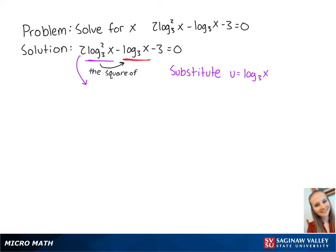Now we have 2u squared minus u minus 3 equals 0. This can factor out to become (2u minus 3) times (u plus 1) equals 0.